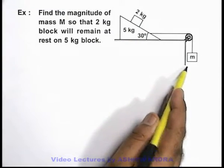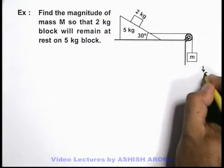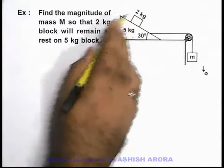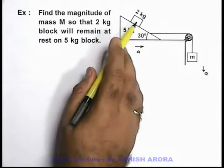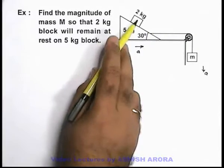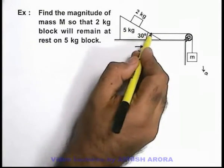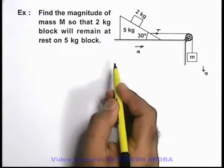We can say this mass m, if it is coming down with an acceleration ay, both of these blocks will also move towards right with acceleration ay. And we can consider this combined system as a 7 kilogram block, which is pulled by this string having tension T.